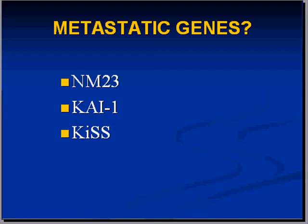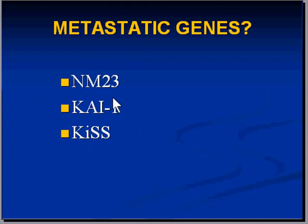There are several genes — proto-oncogenes — which, when they are mutated, become oncogenes. Mutations of these proto-oncogenes, specifically NM23, KAI-1, and KISS, are all genes which have been implicated in the metastatic process.